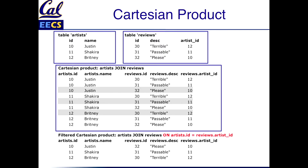The Cartesian product means that for this first row in the artist table, we're going to match it up with every possible row in the reviews table, so we get three copies of it. Similarly for the second and the third row in the artist table. The total number of rows in the Cartesian product is the number of rows in one table times the number of rows in the other. All we've done is take every row from one table and match it up with every possible row of the second table — that's a brain-dead stupid operation.